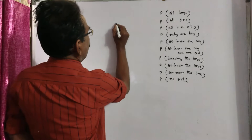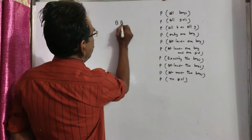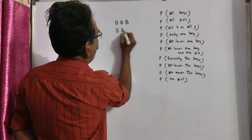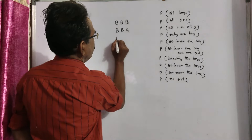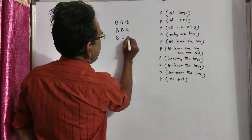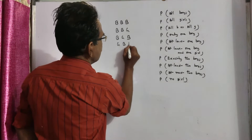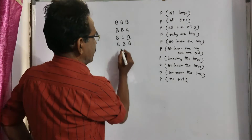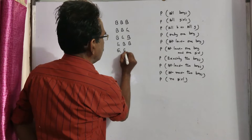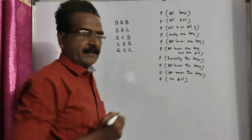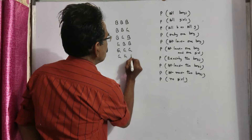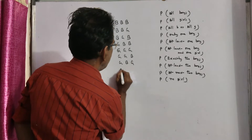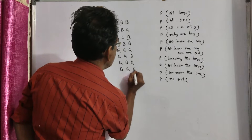All three can be boys, or the first two are boys and the third is a girl, or the middle child is a girl and the first is a girl. And in the other four cases, all three are girls, or the last one is a boy, the middle one is a boy, or the first one is a boy.